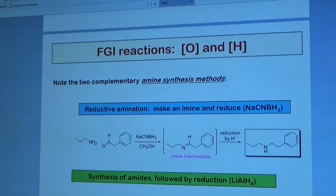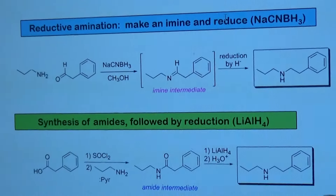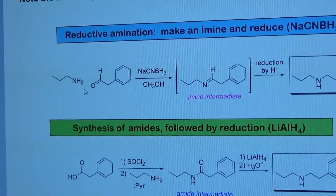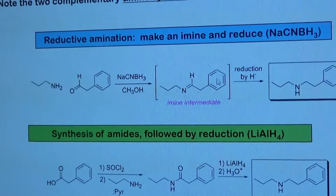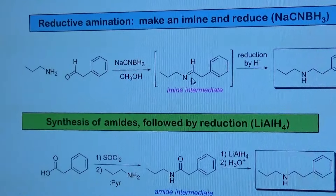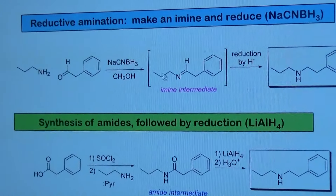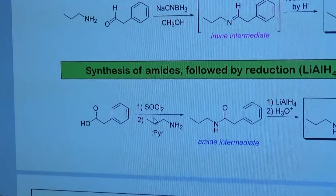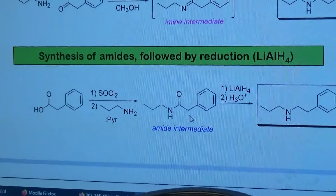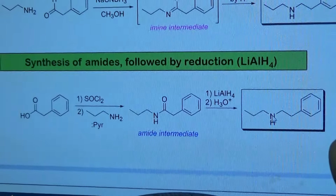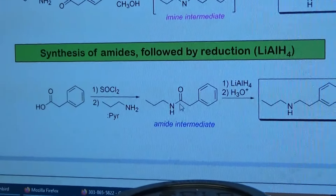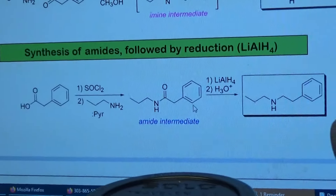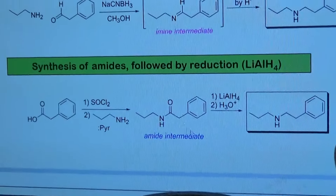Just a reminder — there are two ways to make amines. One is called reductive amination, which uses NaCNBH3 where you have an amine and an aldehyde or ketone reacting, forming an iminium intermediate, and then reducing it with H⁻ specifically NaCNBH3. But if you have an amide and want to reduce it to an amine, you make an acid chloride, attach an amine to get an amide, and then reduce the amide to the amine using lithium aluminum hydride. That's one of the cool ways to make amines.